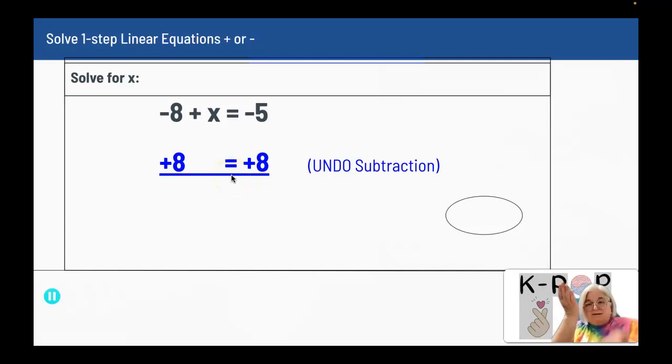It can't be up and one down - it has to be equal balance. My answer is X equals 3, because negative 5 plus 8 is 3.